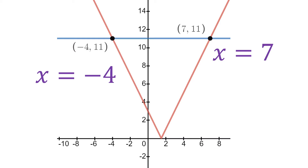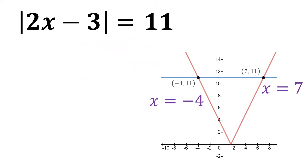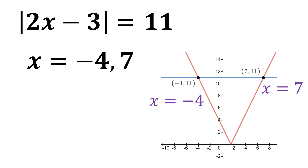So as we go back to that original equation — the absolute value of 2x minus 3 equals 11 — what we can say is that x equals negative 4 and 7. We solved this graphically by taking each side of the equation, graphing it on our coordinate system, seeing the points of intersection, and grabbing those x-coordinates from those ordered pairs. And if you watched the first video, you'll remember that x did equal negative 4 and 7 when we solved it algebraically.